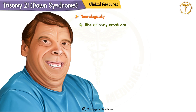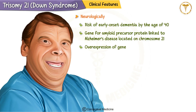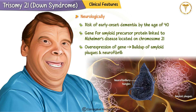Hirschsprung disease causes severe constipation due to missing nerve cells in parts of the intestine. Neurologically, children with Down syndrome are at risk of developing early-onset dementia by the age of 40. This is because the gene for amyloid precursor protein, linked to Alzheimer's disease, is located on chromosome 21. Overexpression of this gene leads to the buildup of amyloid plaques and neurofibrillary tangles in the brain, similar to what is seen in Alzheimer's patients.